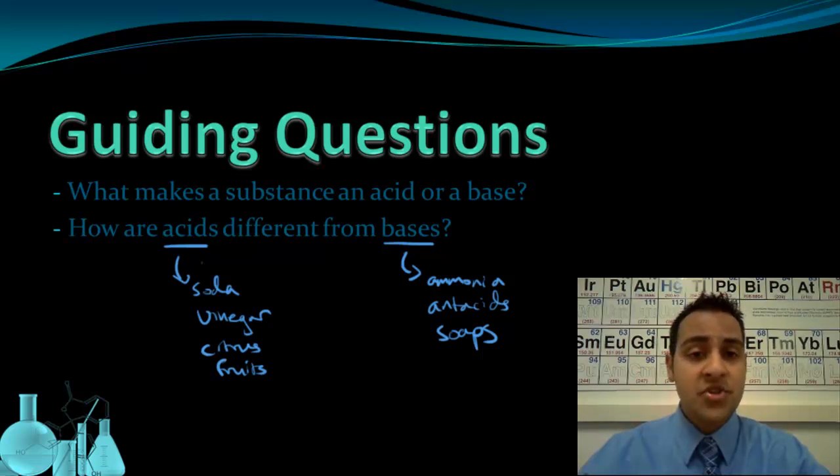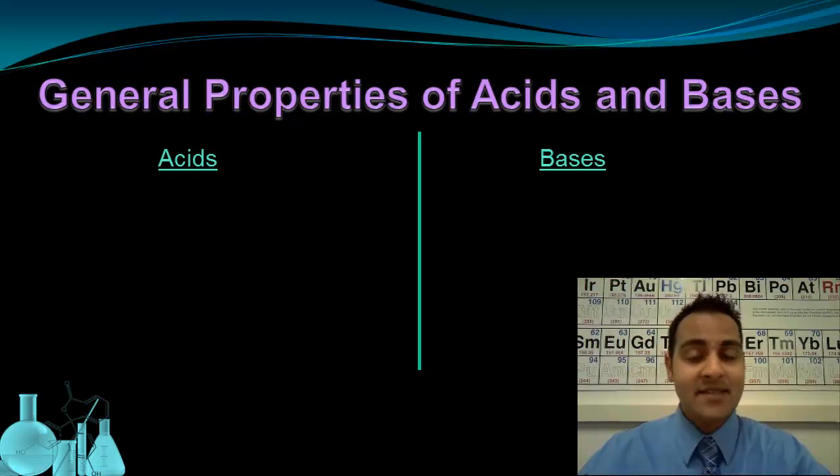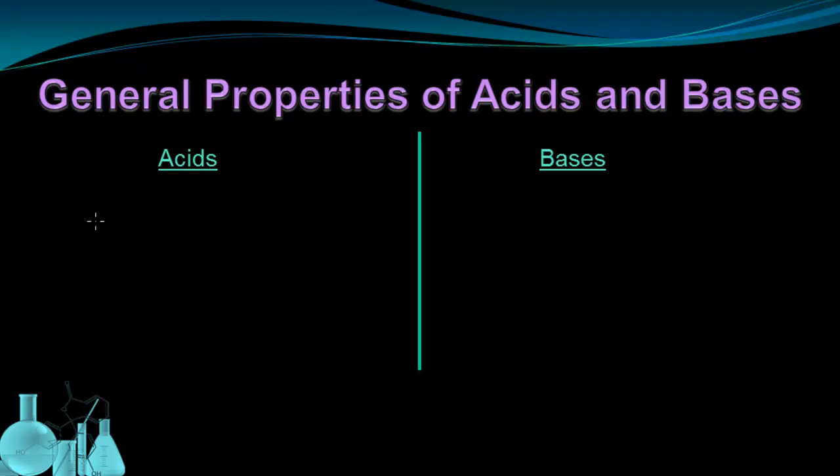But there are also some general properties that we can use to try and recognize acids and bases when we see them. So let's start with acids. Acids typically have a sour taste, which becomes evident in things like vinegar. There's acetic acid in vinegar that gives it its characteristic taste. There's also citric acid in some fruits, like lemons for example.